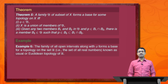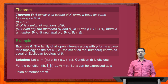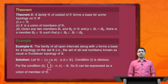Next we introduce an example: the family of all open intervals along with phi forms a base for a topology on the set R, known as the usual or Euclidean topology on R. Let script-B = {phi} union {open intervals (a,b) : a, b belong to R}. Condition 1 is obvious since phi belongs to script-B. For condition 2, the union from n=1 to infinity of the open interval (-n, n) equals R, so R can be expressed as a union of members of script-B.